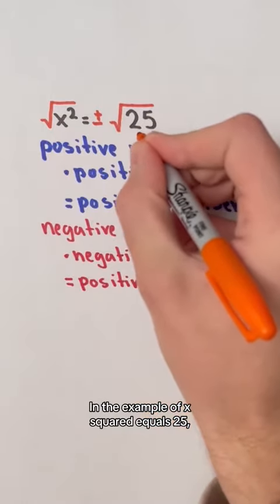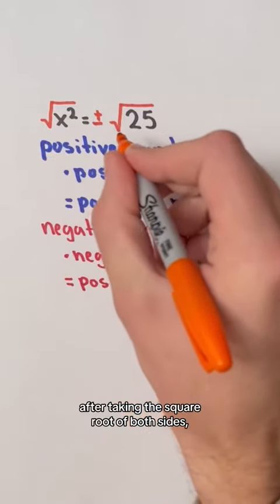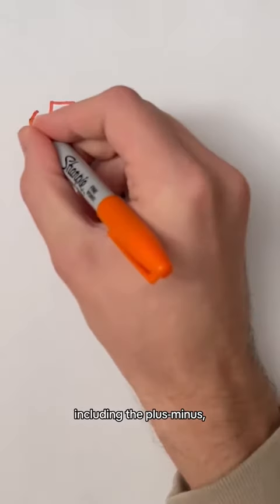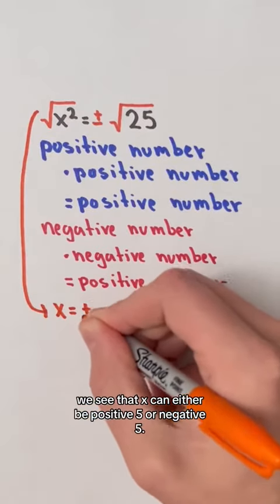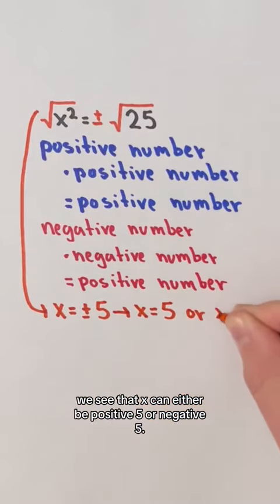In the example of x squared equals 25, after taking the square root of both sides, including the plus minus, and simplifying, we see that x can either be positive 5 or negative 5.